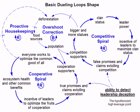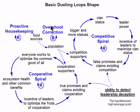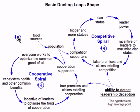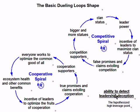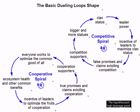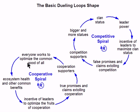Now let's change this model a little to bring out the basic dueling loop shape. We've already changed the title. Next we start removing the nodes that are not generic because they apply to particular problems. Let's start removing them. Now this one right here we may need, so let's save it. This leaves us with these two spirals. There are still some more non-generic nodes, so let's continue to remove them.